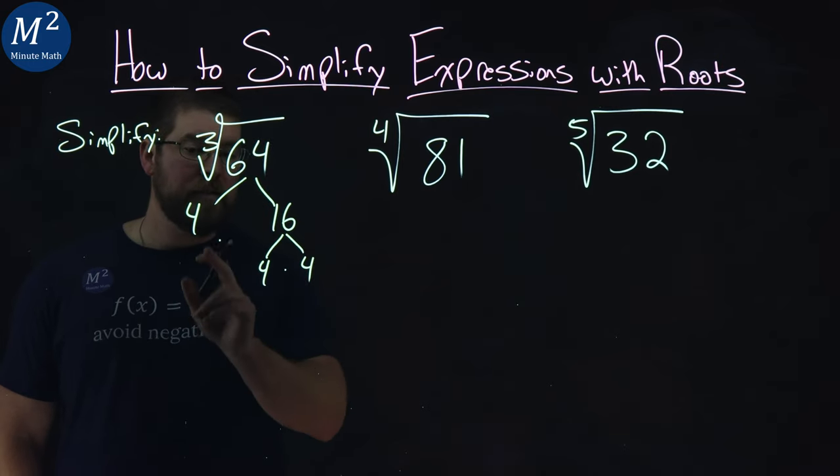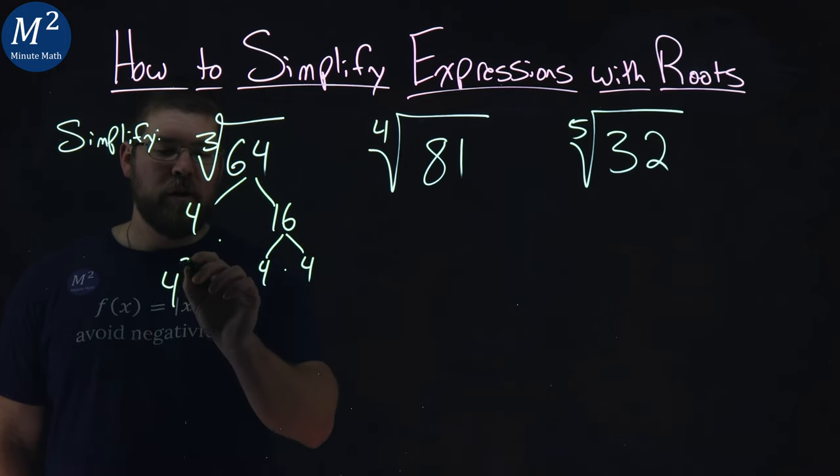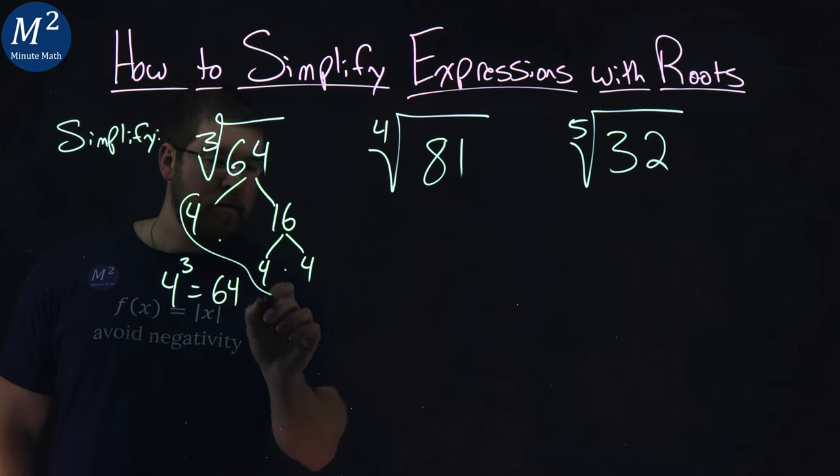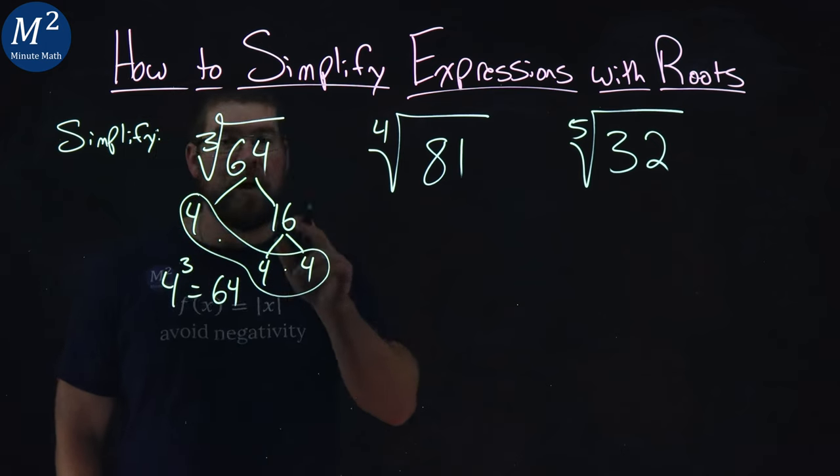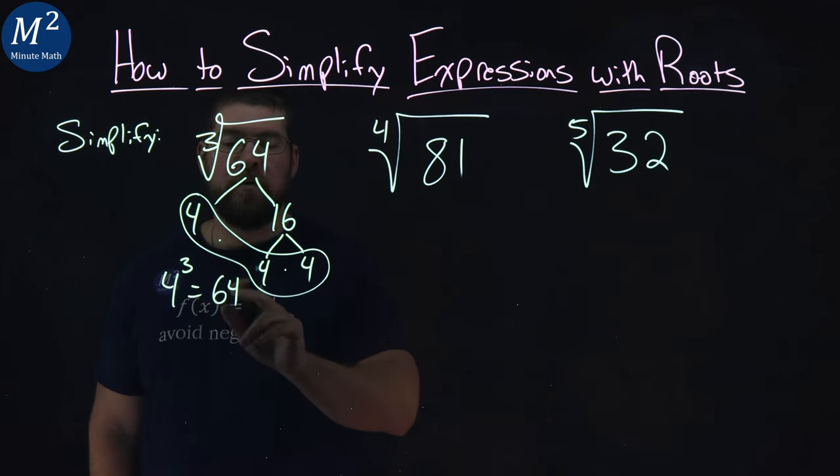So 64 is 4 times 4 times 4, or 4 cubed is equal to 64. We have three of them, right? And the same numbers being multiplied gives us 64. That's how we can quickly identify that 4 cubed is 64.